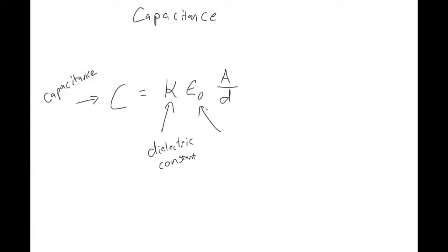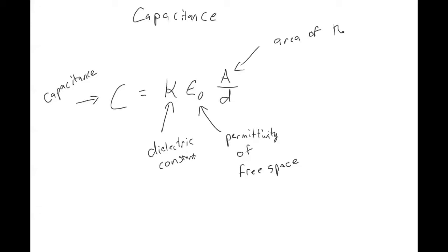This epsilon naught is called the permittivity of free space. This is the area of the capacitor, and this is the distance between the plates of a capacitor.